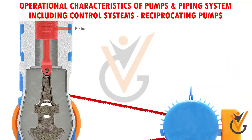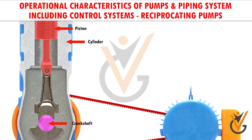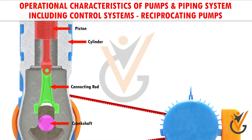It consists of a piston that moves back and forth inside the cylinder. The piston is connected to a crankshaft with the help of a connecting rod. When the motor rotates the crankshaft, the crankshaft converts the rotary motion into reciprocating motion.